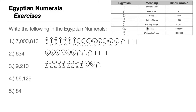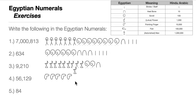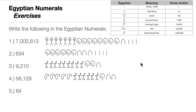For number four, 56,129: write the pointing finger five times (50,000), six lotus flowers (6,000), one scroll (100), two heel bones (20), and nine strokes (9). That's the answer for number four.